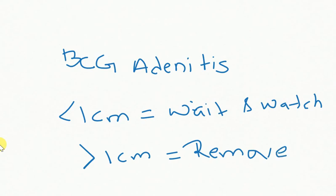No need of INH or any ATT is required—anti-tubercular drugs. So this is what BCG adenitis is: less than 1 cm, wait and watch; more than 1 cm, remove. Surgery is required, so you can advise and go ahead with that.